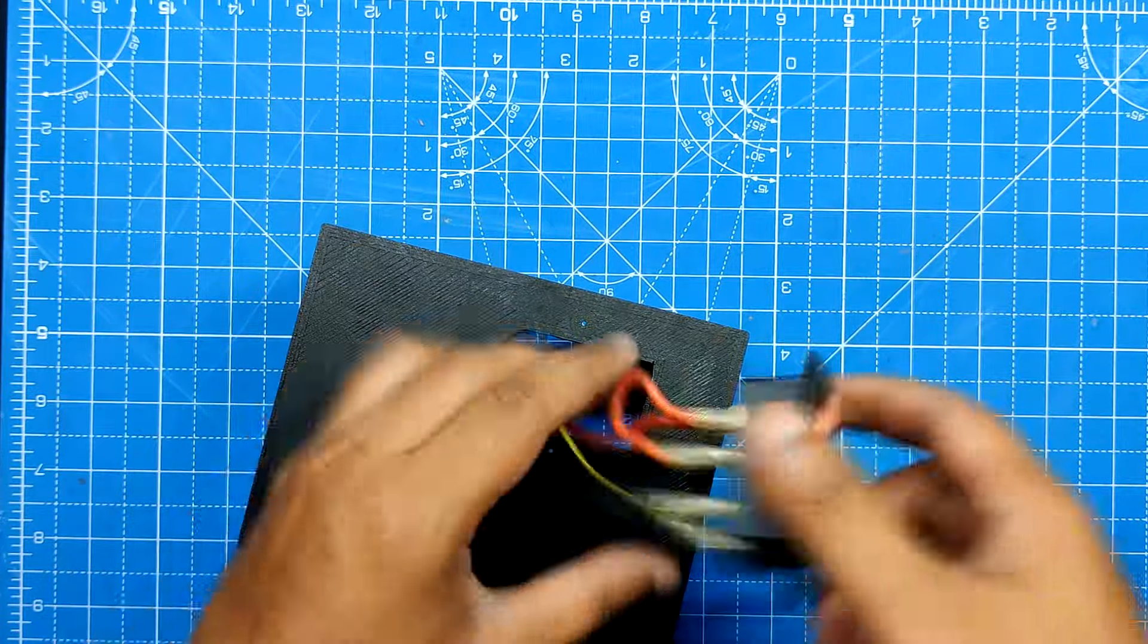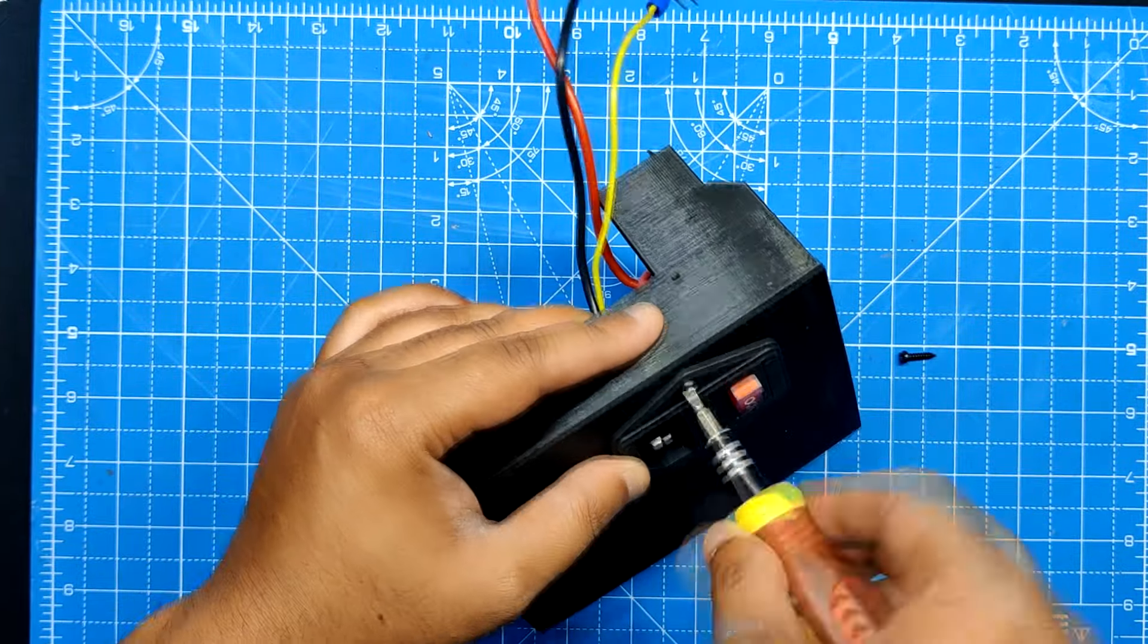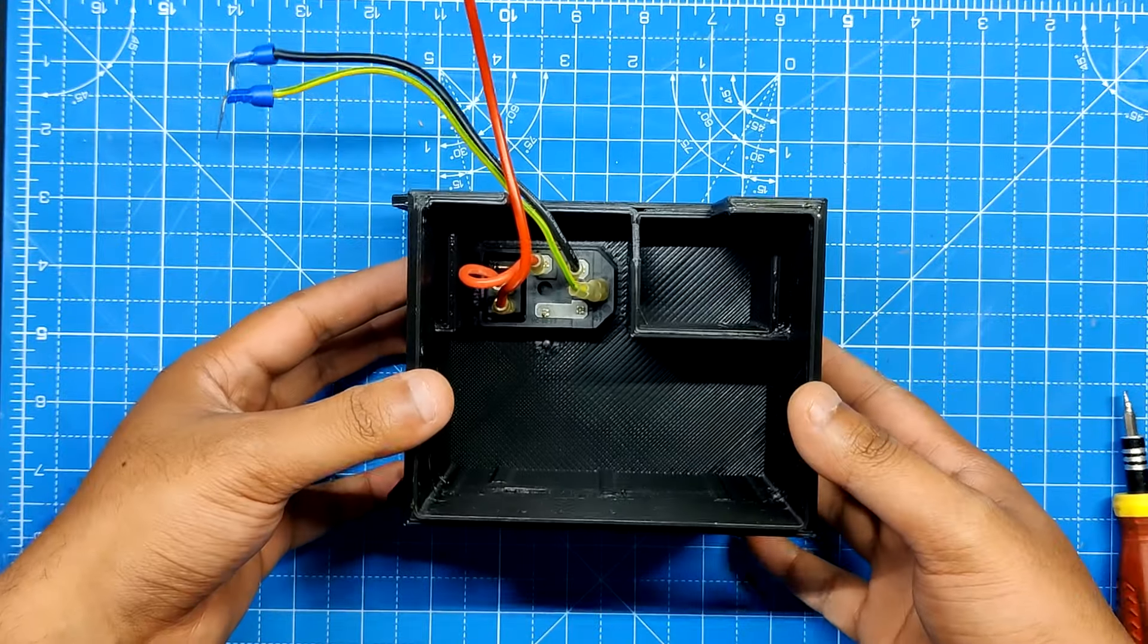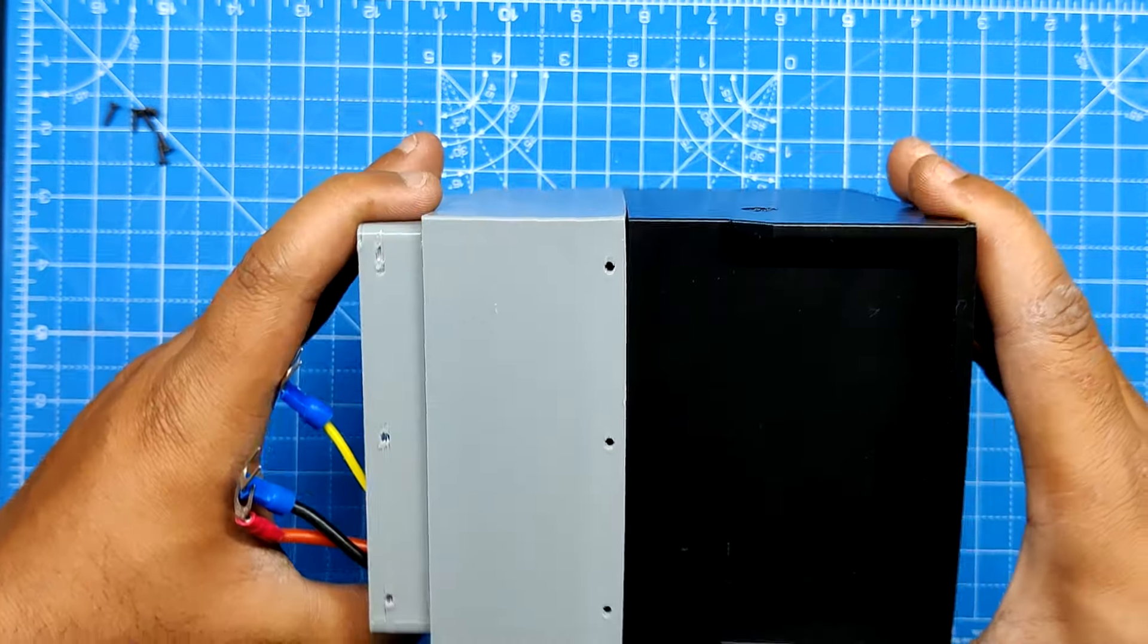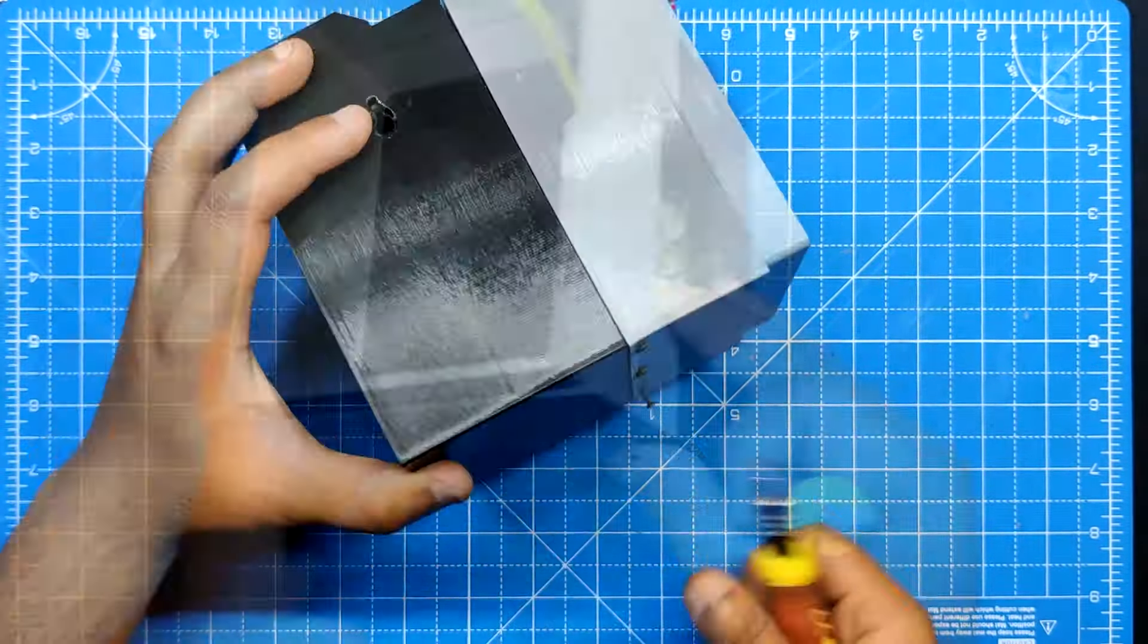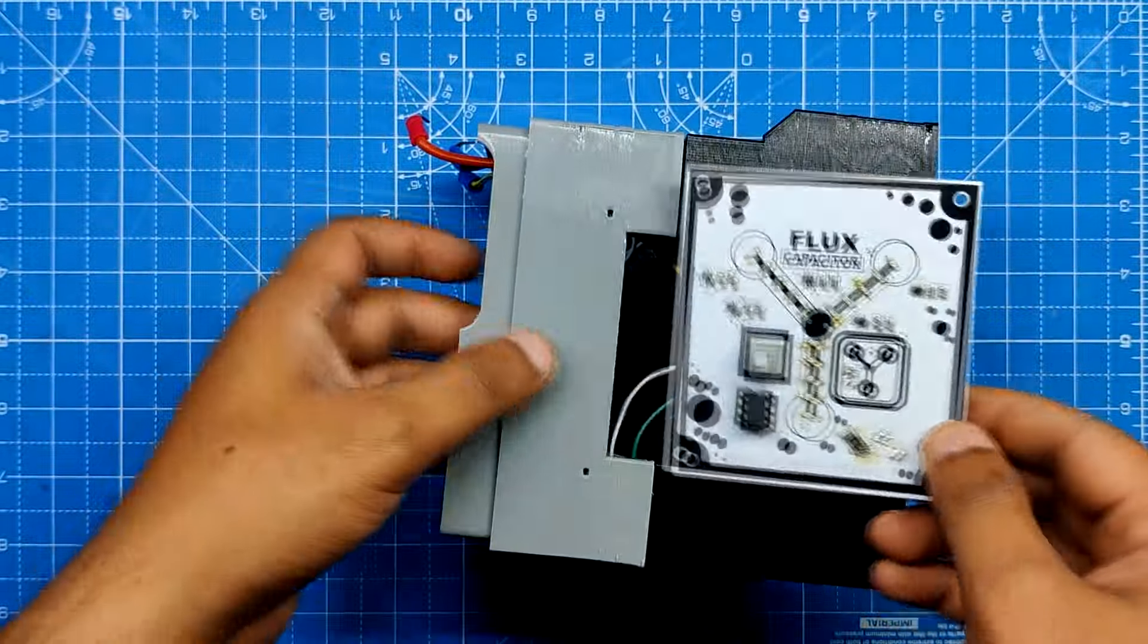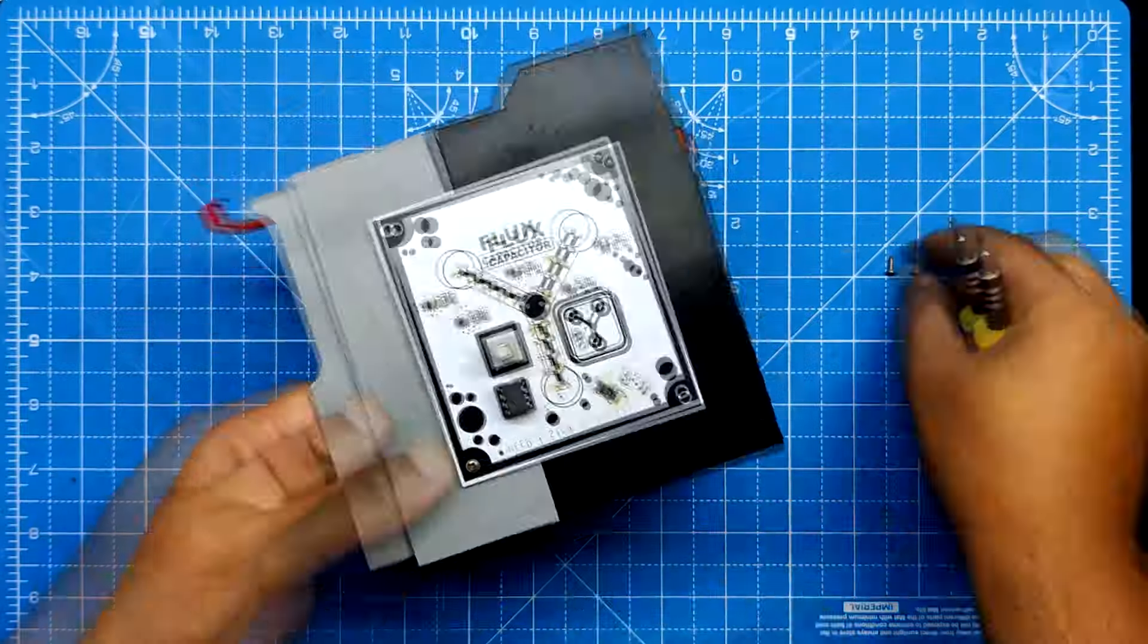We now begin the assembly of the power input section, starting with the power inlet and fastening it with two M2 screws. Using six M2 screws—three on the bottom and three on the top—we join the middle section and the power input section together. On the front face of the power input middle section assembly, we then position the flux capacitor PCB in its proper location. The flux capacitor PCB is then fastened to its location using four M2 screws.